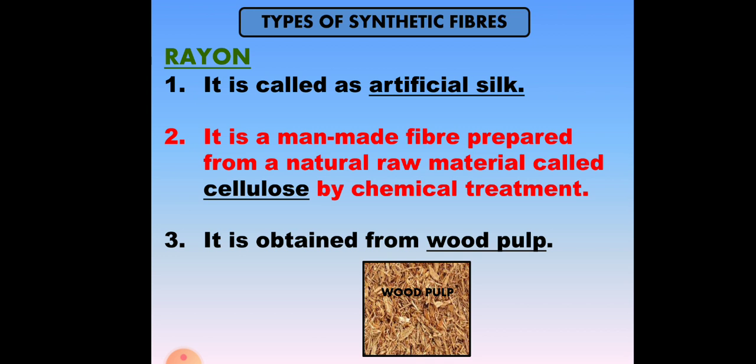Rayon is also a synthetic fiber. We call rayon artificial silk due to its luster. It is a man-made fiber prepared from a natural raw material called cellulose. Since it undergoes chemical treatment, we should not call it a natural fiber — we must call it a synthetic fiber. It is obtained from wood pulp.